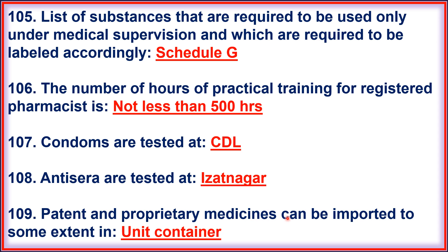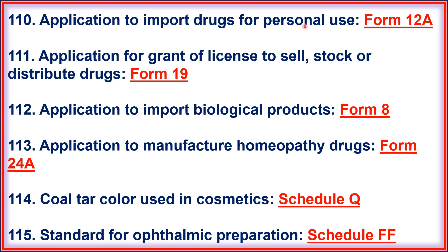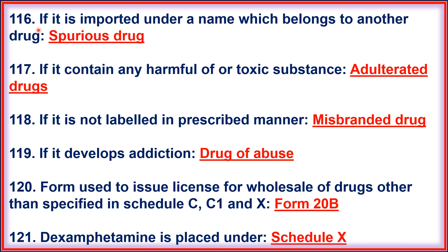109. Patent and Proprietary Medicines can be imported to some extent in Unit Container. 110. Application to Import Drugs for Personal Use: Form 12A. 111. Application for Grant of License to Sell, Stock or Distribute Drugs comes under Form 19. 112. Application to Import Biological Products: Form 8. 113. Application to Manufacture Homeopathic Drugs: Form 24A. 114. Color used in Cosmetics comes under Schedule Q. 115. Standard for Ophthalmic Preparations comes under Schedule FF.